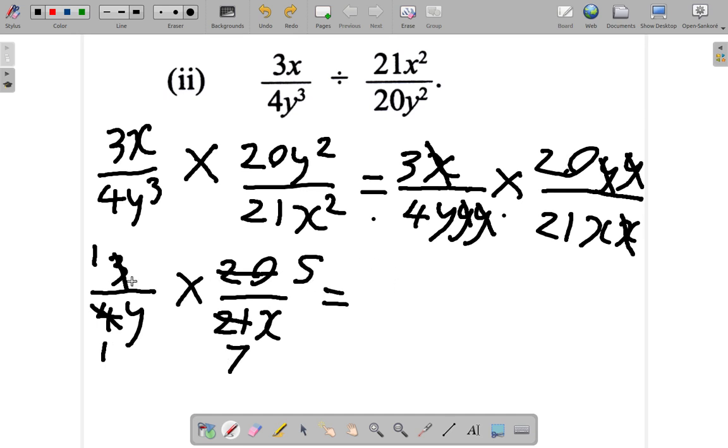So here you have 1 over 1y, which is just y. 1 over y, multiplied by 5 over 7x.